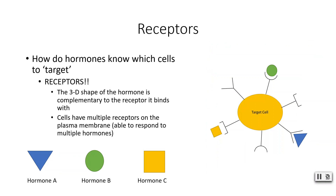How do the hormones know which cells are the target cells? The answer is receptors. Each hormone has a specific three-dimensional shape and the receptor has a complementary three-dimensional shape. Cells have multiple receptors on the plasma membrane and within the cell itself, so they are actually able to respond to the effects of multiple hormones. As you can see in our image, hormone A, hormone B, and hormone C all have very different shapes, and our target cell has multiple receptors whose shapes are complementary to the shape of each hormone.